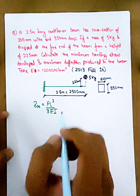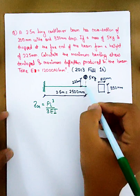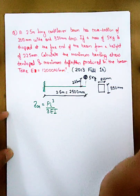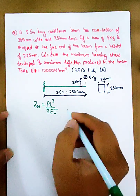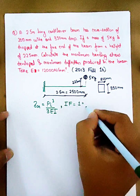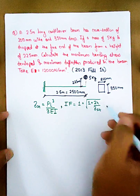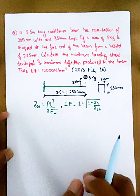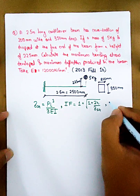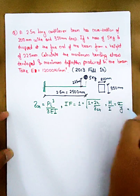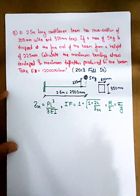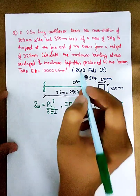Delta static is the deflection due to the static 5 kg load applied gradually. The maximum deflection under impact will be larger than delta static. The impact factor formula is: impact factor = 1 + √(1 + 2h/δ_static), where h = 225mm and δ_static is the static deflection. For bending moment: M/I = σ/y. Delta max equals the impact factor multiplied by delta static.